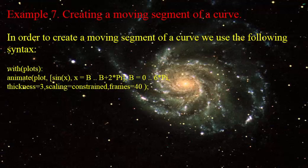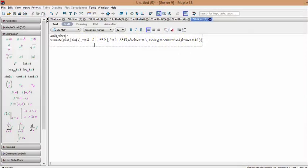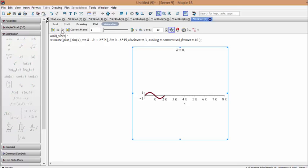Example 7: Creating a moving segment of a curve. In order to create a moving segment of a curve we use the following syntax. By copying and pasting the commands here we can get the following plots. By clicking on each plot we can activate the tools for animating the plot.